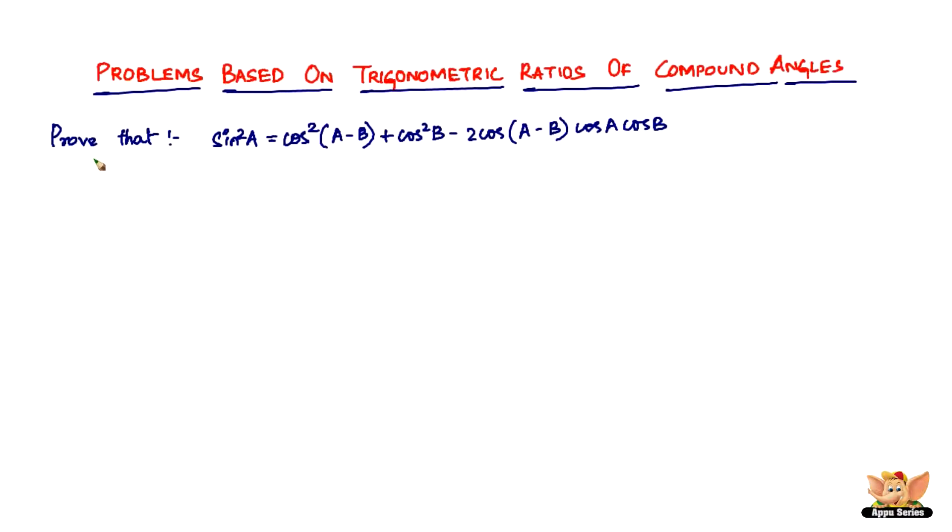Here we've got a problem which says prove that sin²A equals cos²(A-B) + cos²B - 2cos(A-B)cosAcosB. Well, it might seem really messed up and confused, but you need to know one thing: once you solve this problem, you cannot start from LHS. You have nothing to work with.